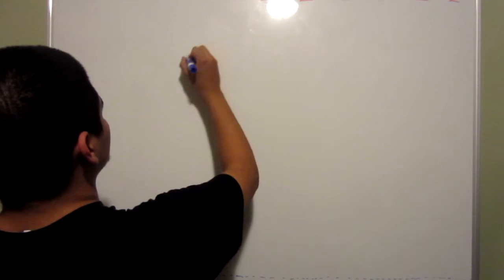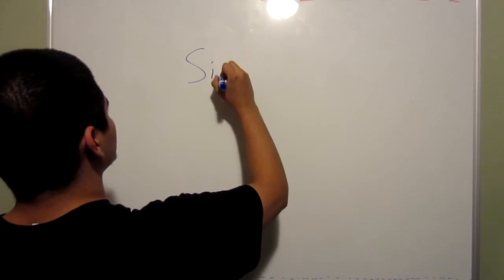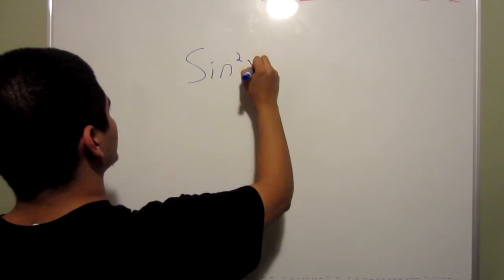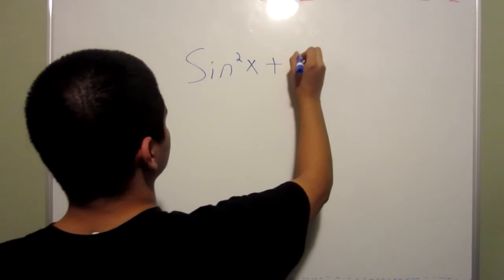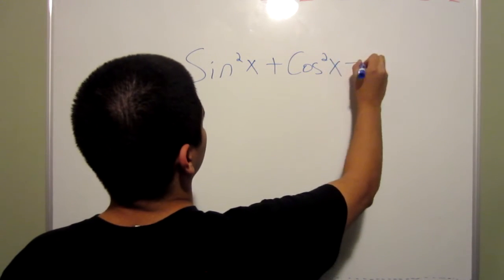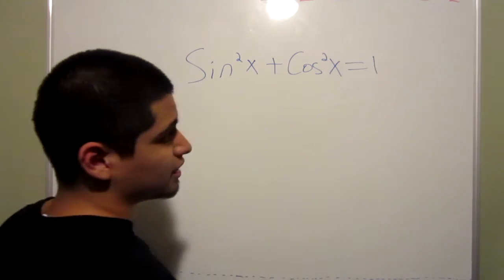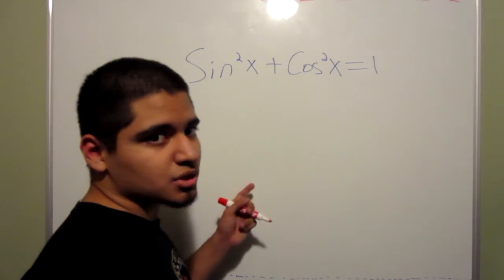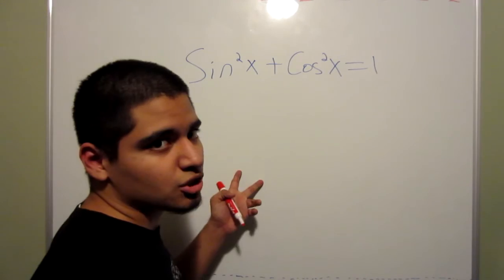So, the first Pythagorean identity would be sine squared x plus cosine squared x equals 1. Now, this is the one you really need to know in order to know the other two I'm going to show you.